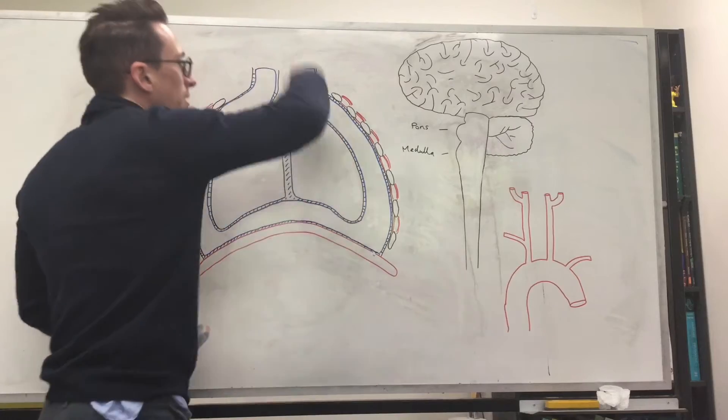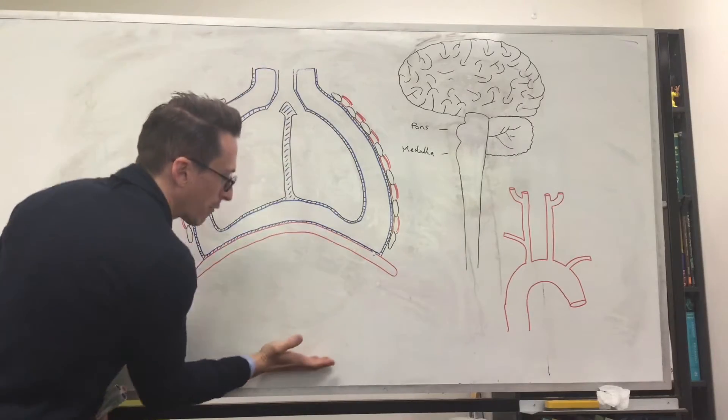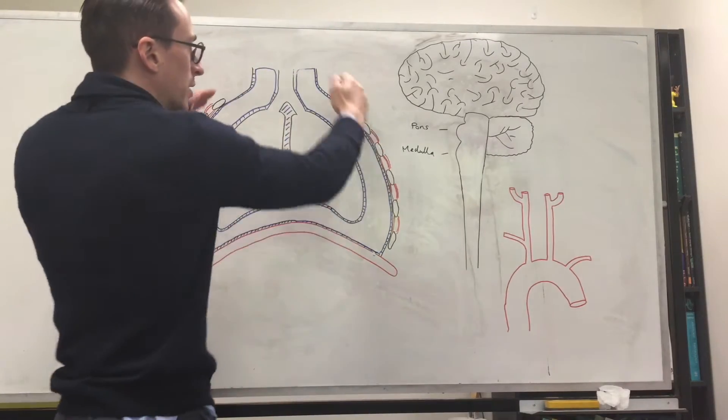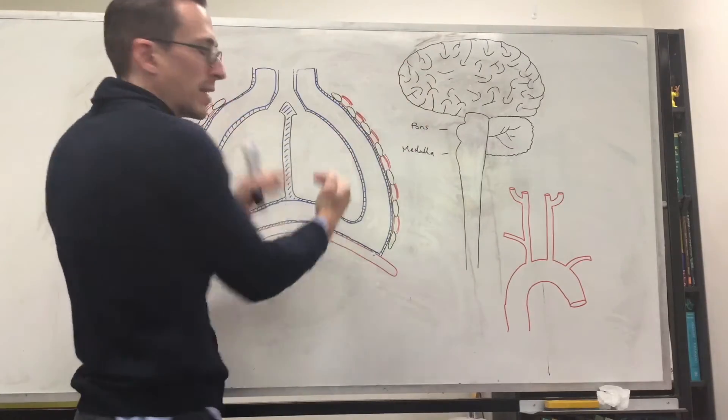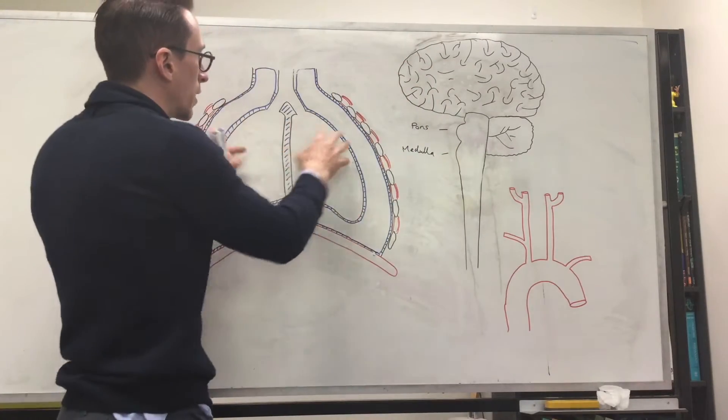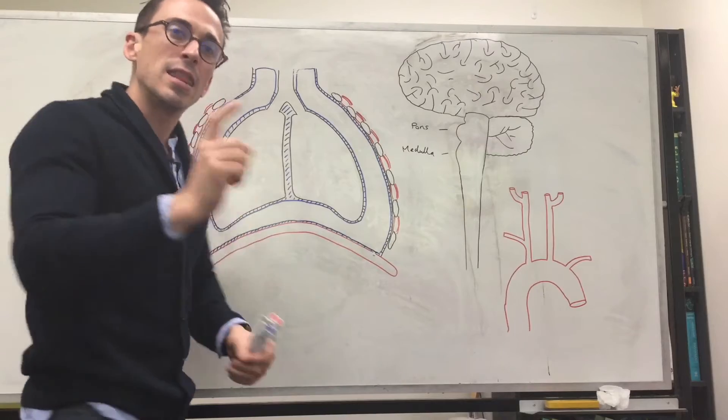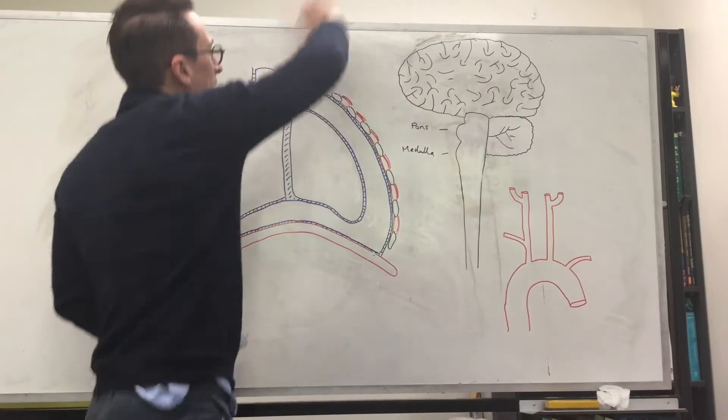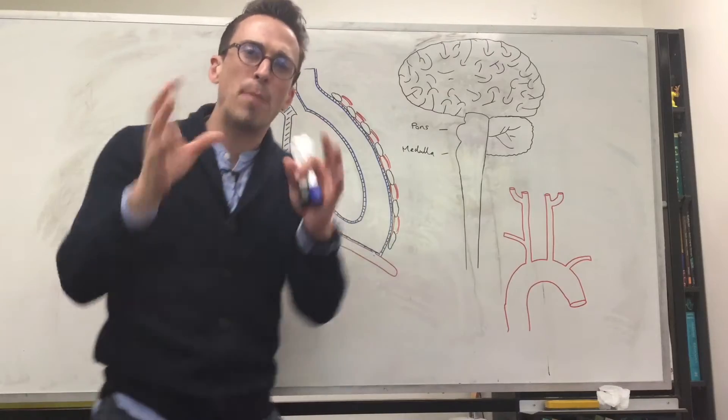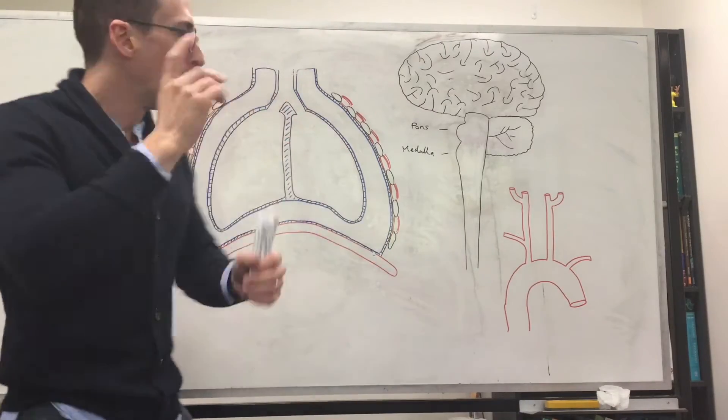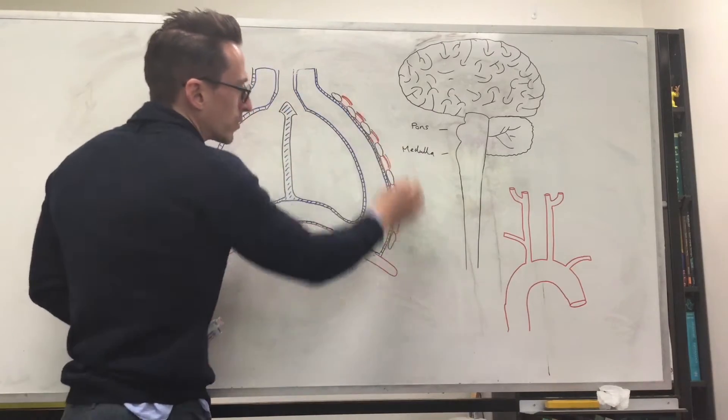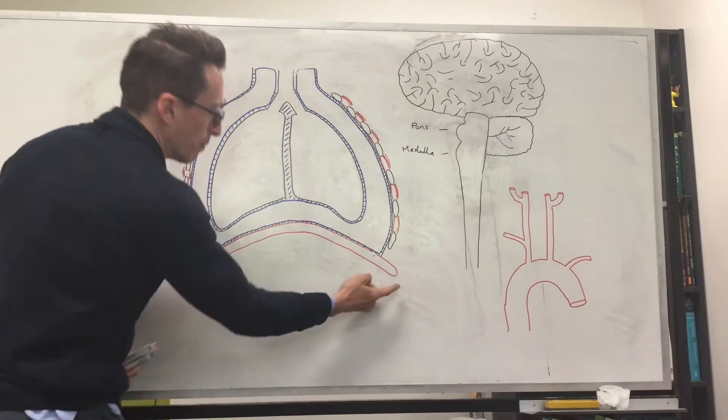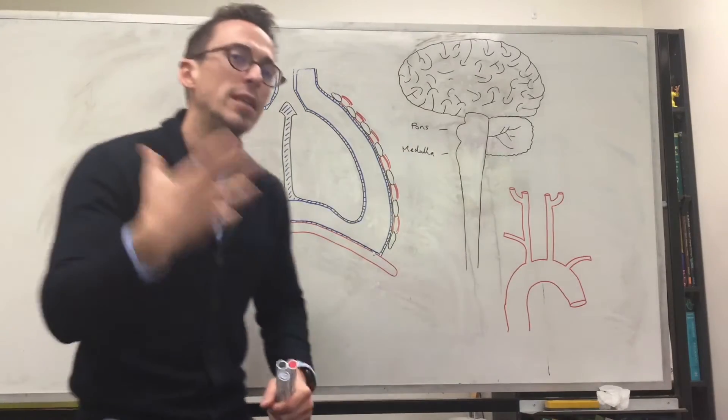Now when we want that air or gas to go back out, we simply relax the diaphragm. It snaps back up. We relax the external intercostals. The ribcage moves back down and the elastic recoil of the lungs snap back into place. Therefore, decreasing the volume, increasing the pressure inside and gas moves back out again. So that's the basics. That's breathing mechanics. But how do we tell the muscles of the external intercostals and the muscle that's the diaphragm, how do we tell it to contract?